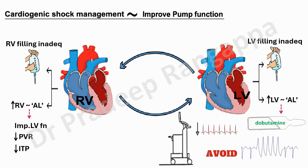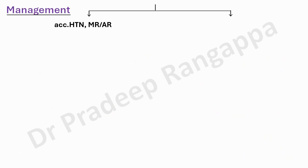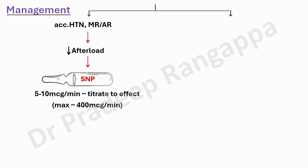For trainees: categorize cardiogenic shock into etiological management, contractility, preload management, and other organ dysfunction support. ADHF often precedes and precipitates cardiogenic shock. When ADHF presents with accelerated hypertension and significant MR, focus on reducing afterload. In these high blood pressure situations, sodium nitroprusside can be considered at 5–10 micrograms per minute, titrated to effect, with a maximum dose up to 400 micrograms per minute.